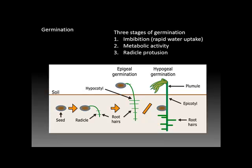There are two common types of germination. Epigeal, where the radical pushes the embryo and what's left of the seed coat above the soil surface, and hypogeal germination, which results in the epicotyl extending from the seed and pushes the plumule and the cotyledons above the soil surface while the seed coat remains underground.